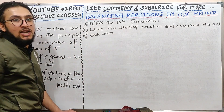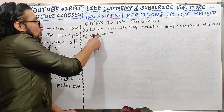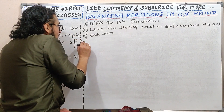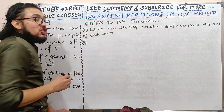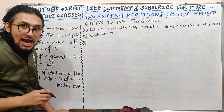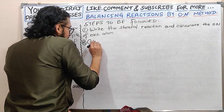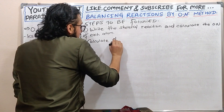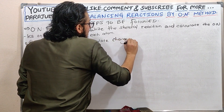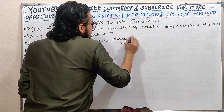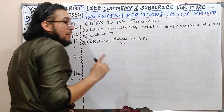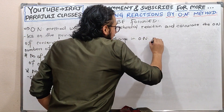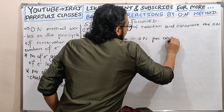If you change the oxidation number, you will need to note it. The oxidation number is per atom — first, per atom.